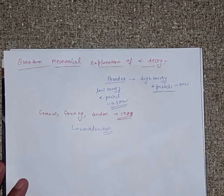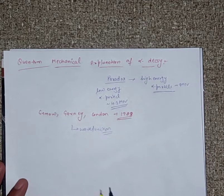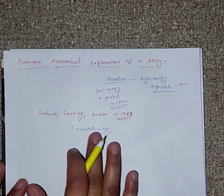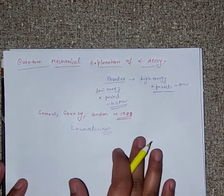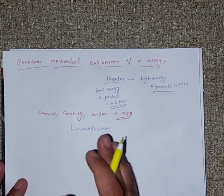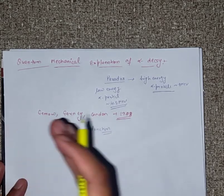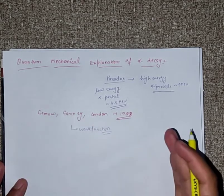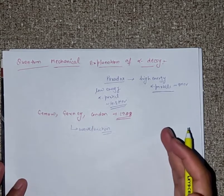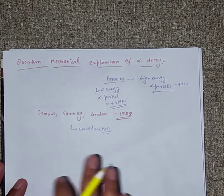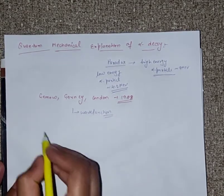This effect is the tunneling effect, or quantum mechanical tunneling. There is a small but finite probability that the alpha particle leaks through the potential barrier. Whether classical mechanics calls it certain or not, quantum mechanics gives a probability.